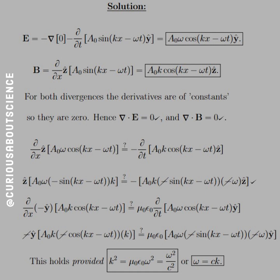Alright, for both divergences, the derivatives of the constants, so they are 0. Hence, the divergence of E equals 0, and the divergence of B equals 0. So, okay, that makes sense. No big deal.